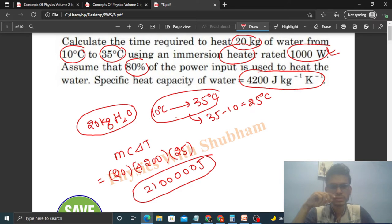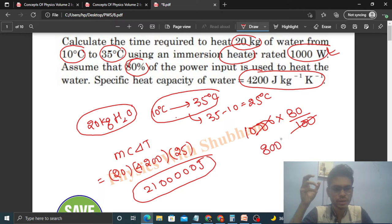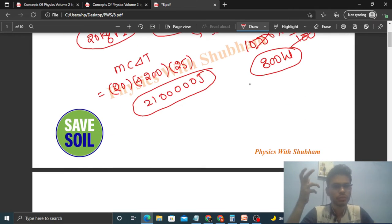And the heater you have is 1000 watt, but 80 percent efficiency. So 80 percent of 1000, this will be 800 watt.